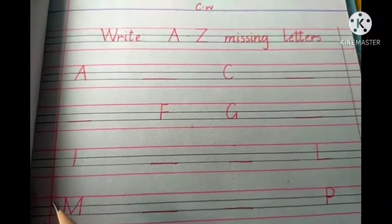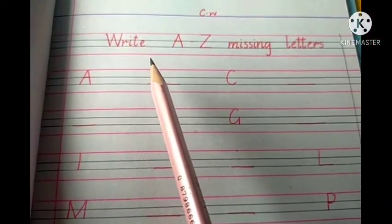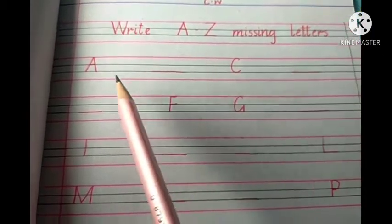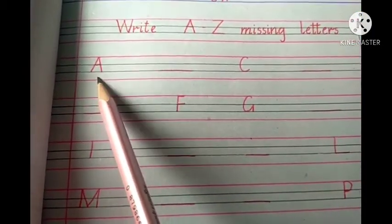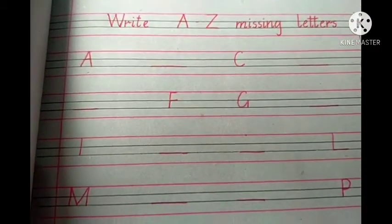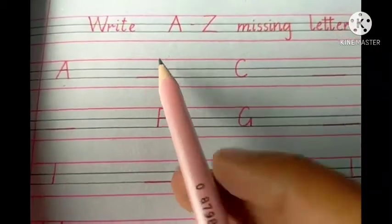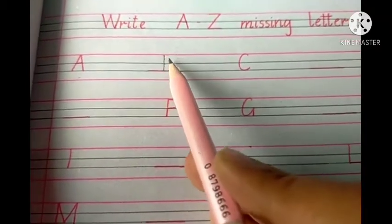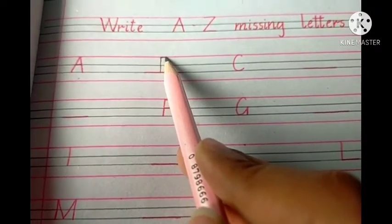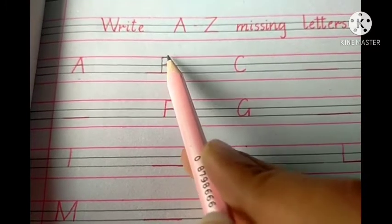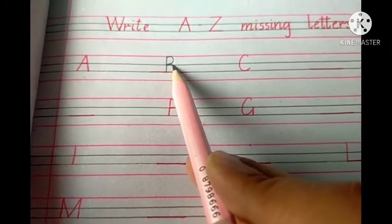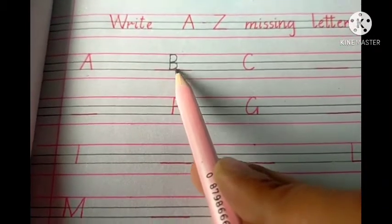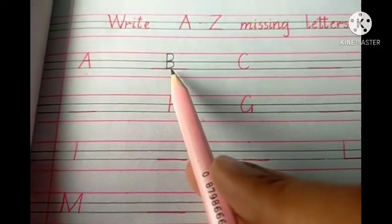Write capital B and small b also. Now we are going to start notebook work. Write A to Z missing letters. A — what comes after A? B. Hold your pencils. First, you make a straight standing line in the first three lines, then make a half circle in the second and third line. Like this. Which letter? B.